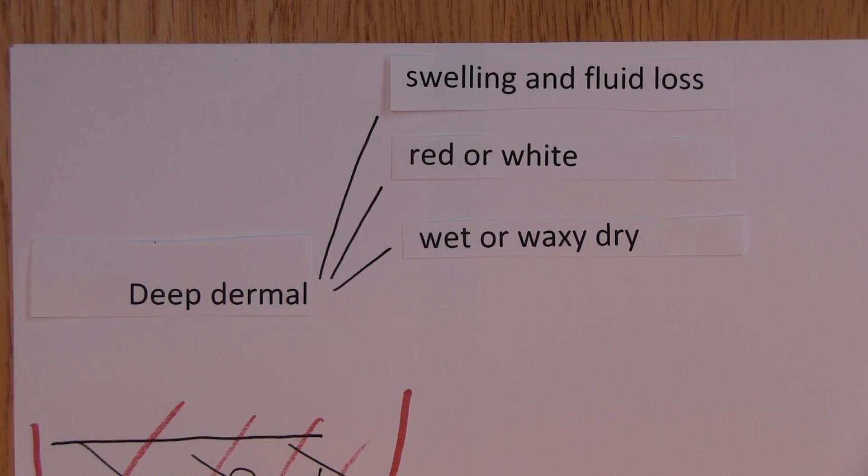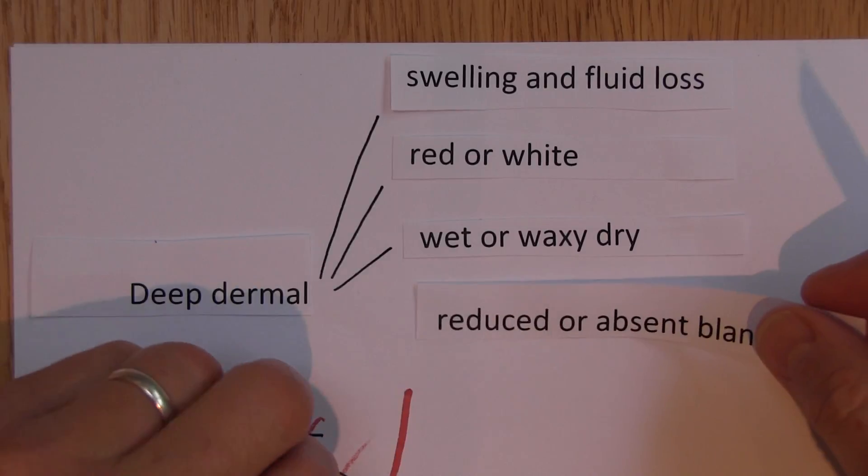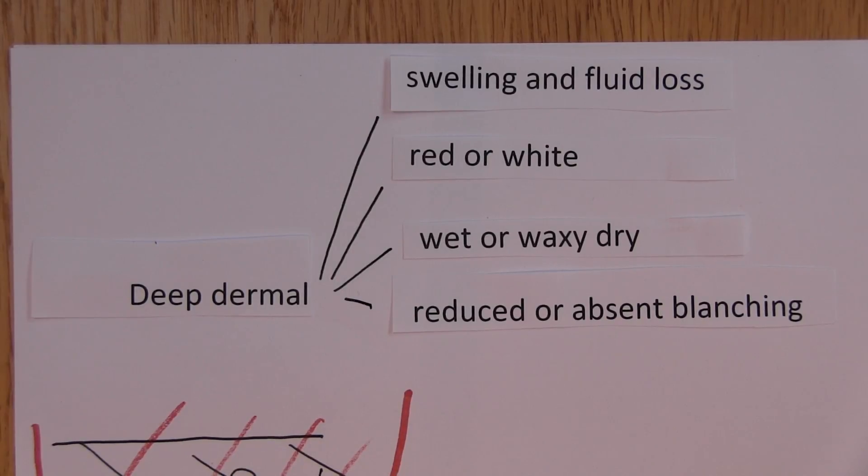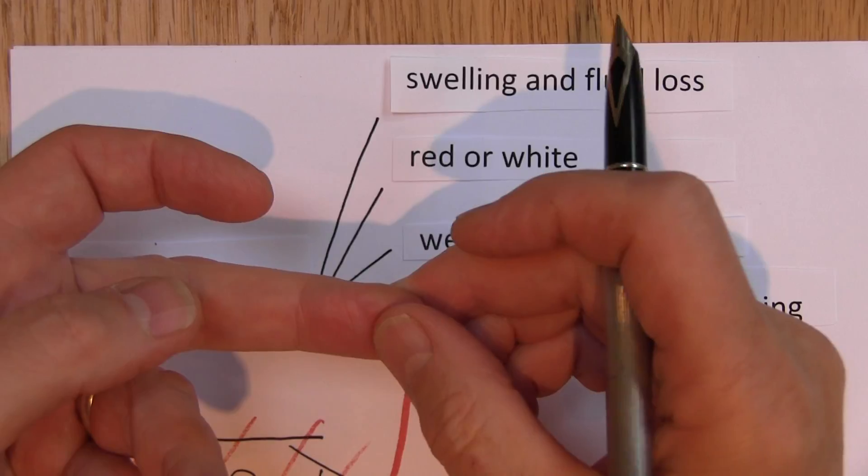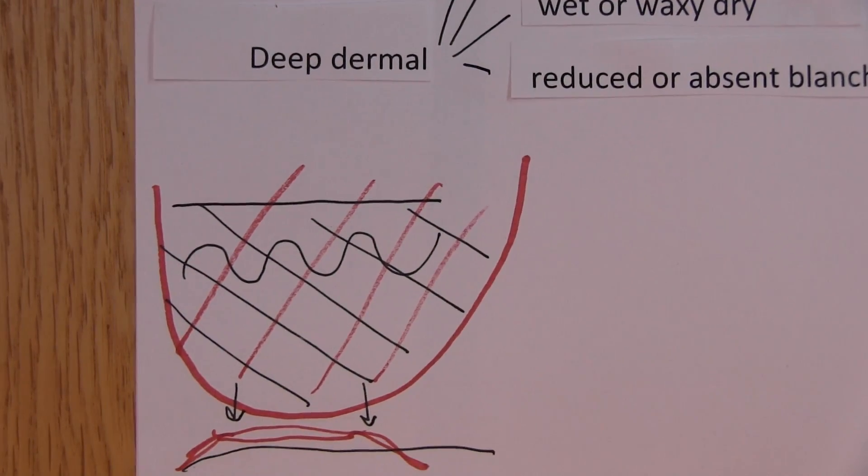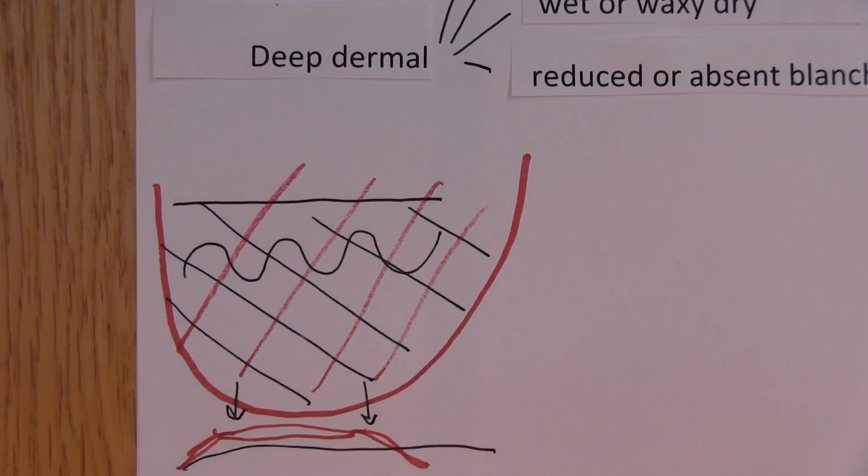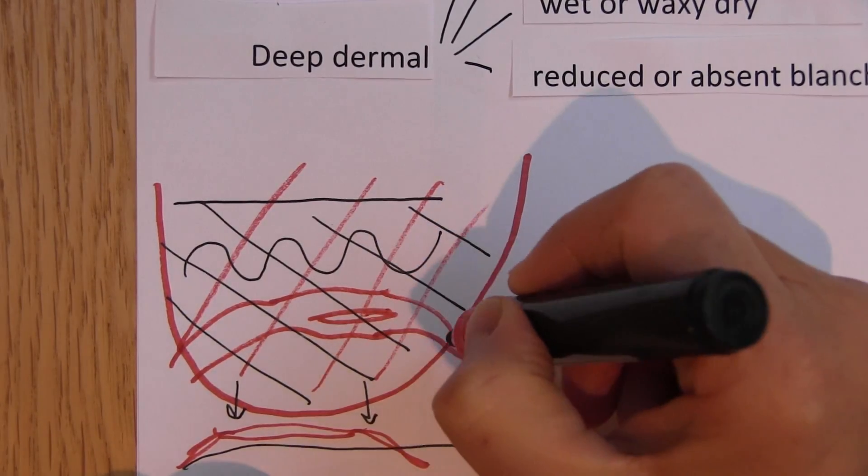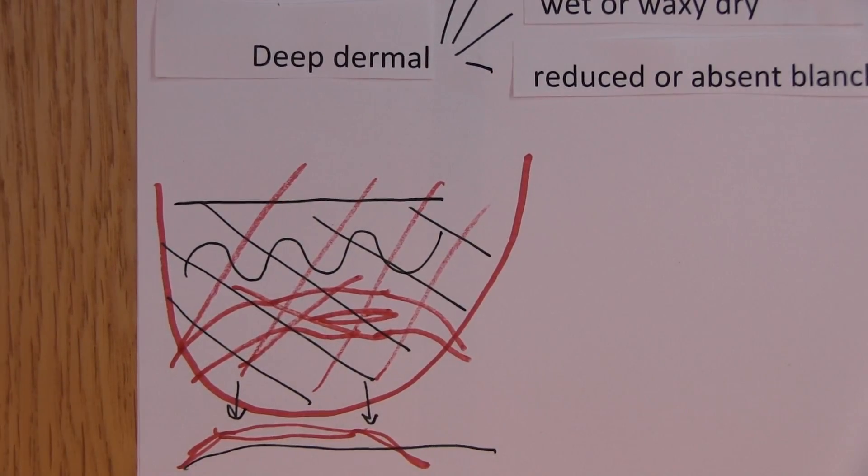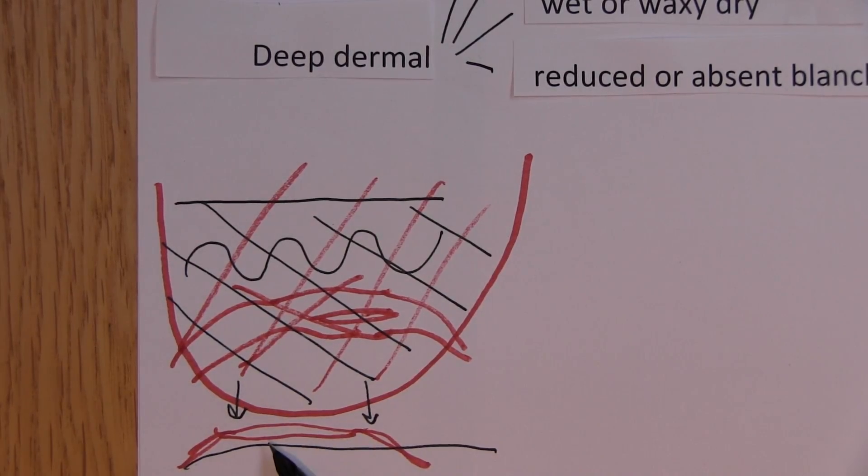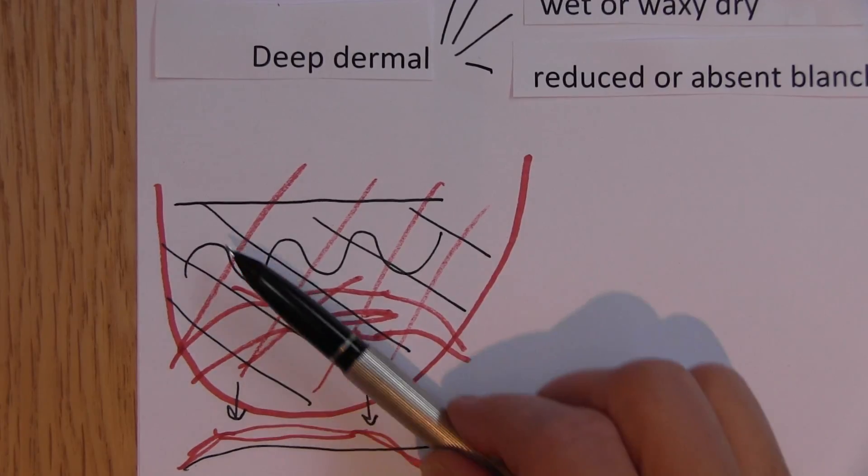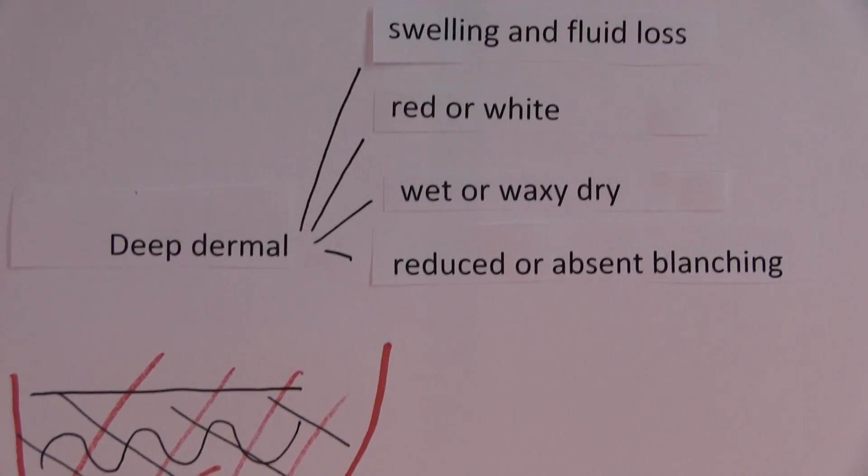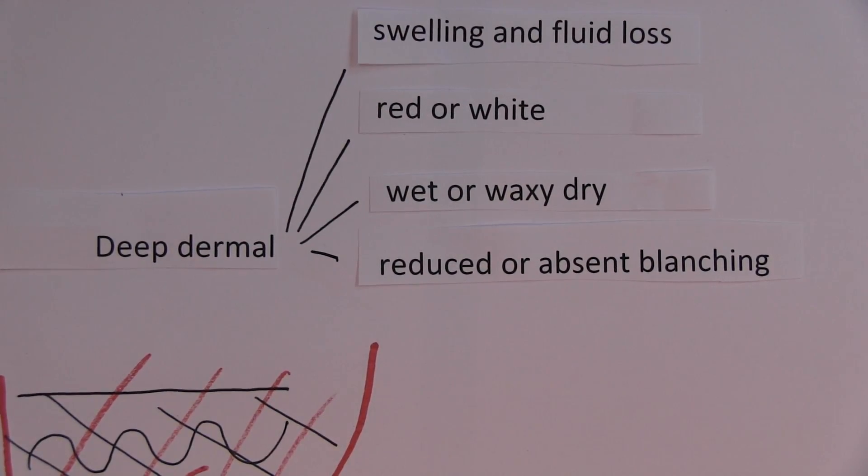And given that a lot of the blood vessels have been damaged, we're going to get reduced or absent blanching. So the blanching effect is going to be reduced, and the reason for that is the blood vessels here which would have blanched normally, blood vessels that should be here, of course are just burnt away. They're no longer there. And the only ones left to blanch are the small limited number that are left deep in the dermis. So you get progressively less blanching as you burn away more of the dermis, because you're burning away more of the blood vessels.